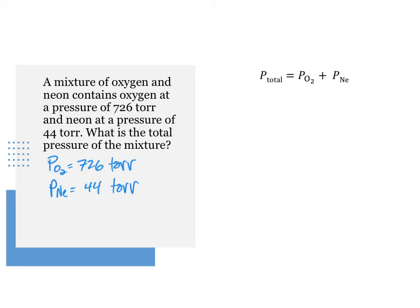We use P total equals the partial pressure of oxygen plus the partial pressure of neon equals 726 torr plus 44 torr equals 770 torr. To make sure all three significant figures are counted, we add a decimal point behind the zero.